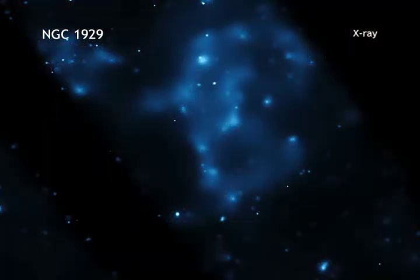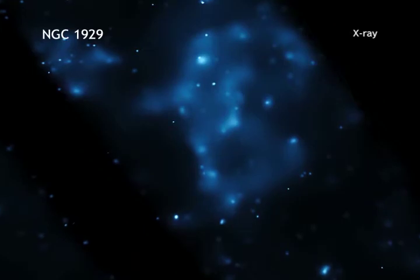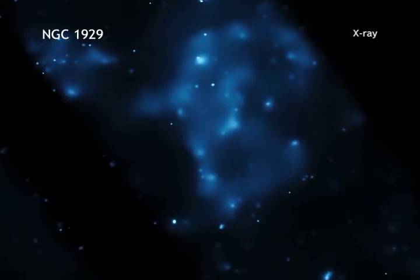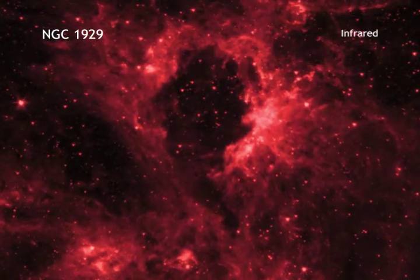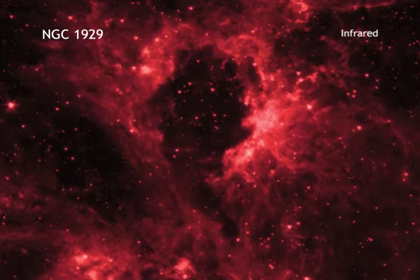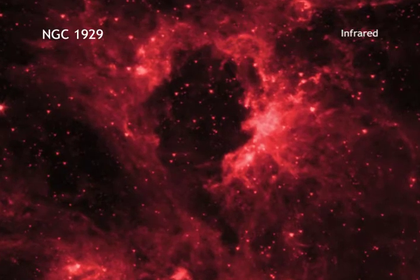X-rays from NASA's Chandra X-ray Observatory show hot regions created by these winds and shocks. Meanwhile, infrared data from NASA's Spitzer Space Telescope outline where the dust and cooler gas are found.